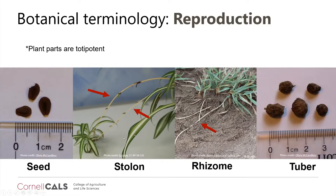Starting with stolons — the second picture from the left — these are modified stems that run above ground and can reproduce another plant from them. The yellowish-white parts indicated by the arrow are the stolons. Rhizomes are also modified stems, but unlike stolons they run underground and can also produce another plant.